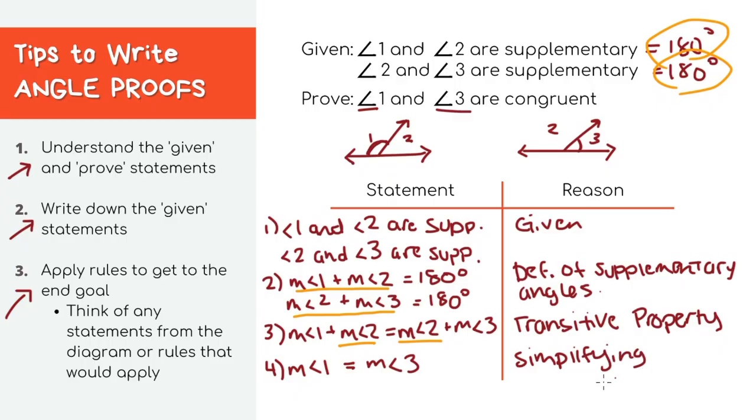Now we have the measure of angle one is equal to the measure of angle three. This is exactly what we wanted because that means angle one and angle three are congruent and the reason is the definition of congruent angles.